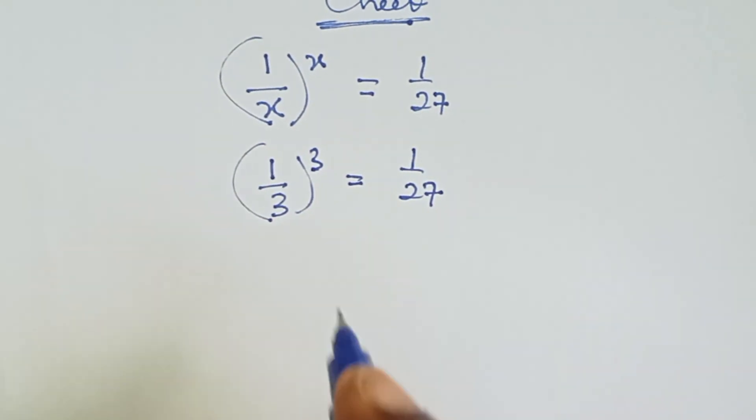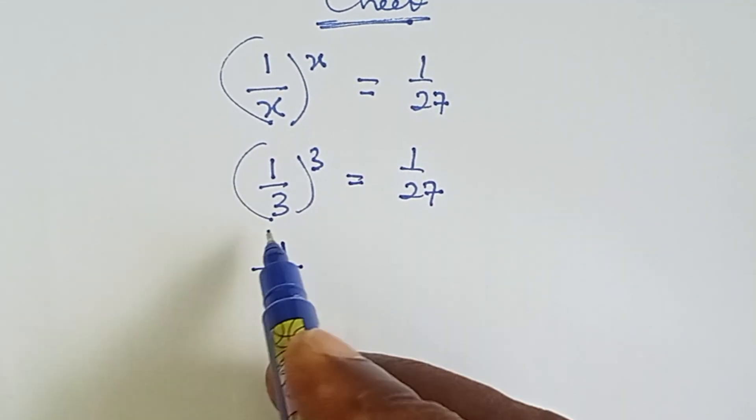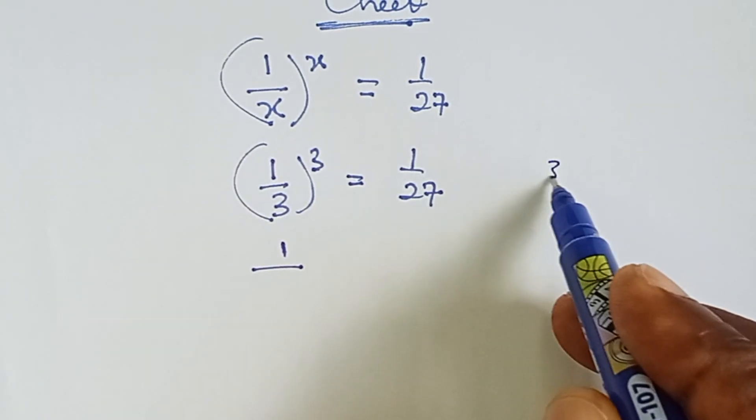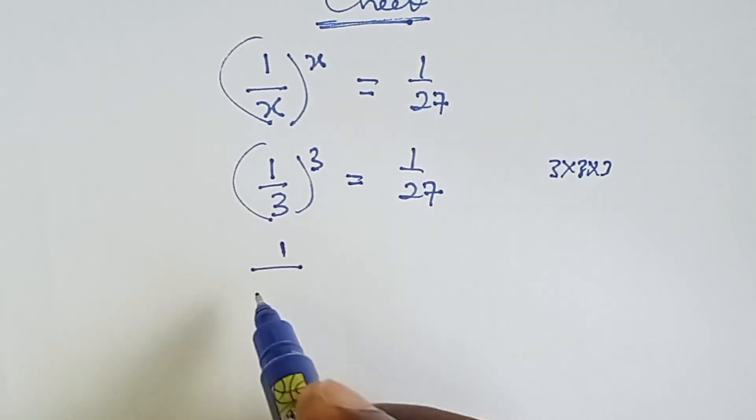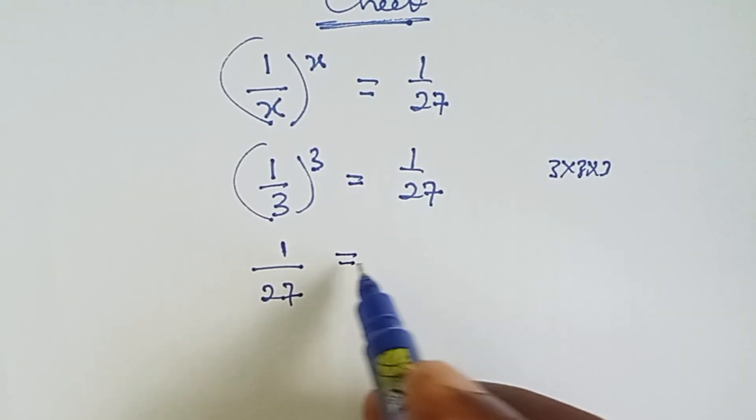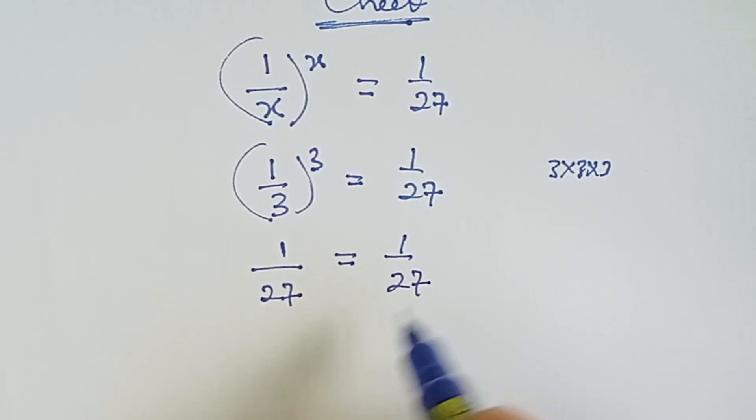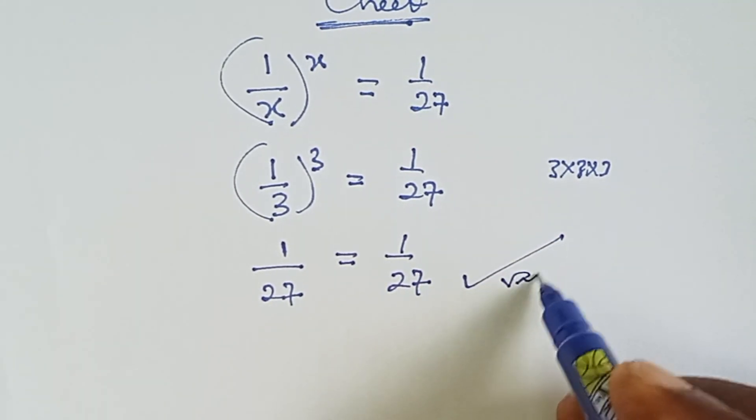What is 1 raised to the power 3? It's the same as 1. And 3 raised to the power 3 means 3 times 3 times 3, which is 27. So 1 over 27 equals 1 over 27. This is valid.